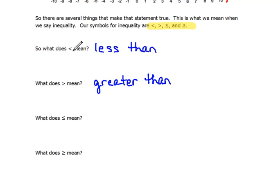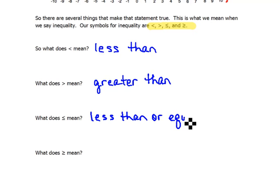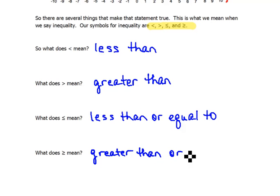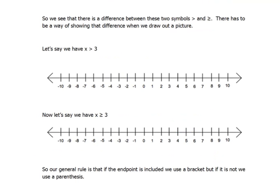If we have our less than symbol with a bar underneath it, that means less than or equal to — it could be either one and still be a true statement. And this symbol with a bar underneath the greater than sign means greater than or equal to. By looking at those, we can see that there is an absolute difference between these two symbols: one is greater than, the other is greater than or equal to.